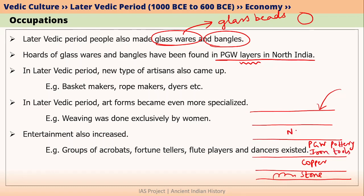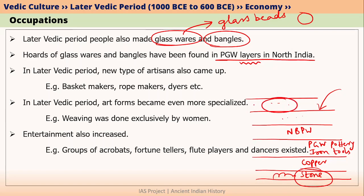Above the PGW layer, you may find northern black polished ware, which is associated with the Mahajanapada period. Above that, you may find something else. What you need to understand is that even at a single place, it is totally possible that different cultures can be found in different layers. Whatever is in the bottommost layer is the oldest culture, whereas whatever is in the uppermost layer is the newest culture.